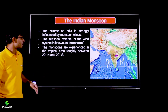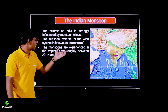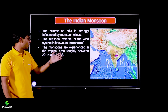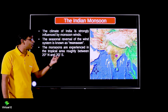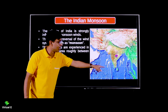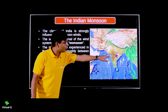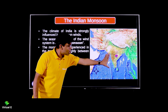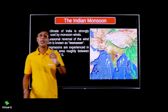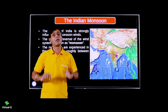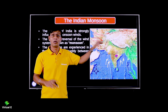Monsoon is experienced in tropical areas roughly between 20 degrees north latitude and 20 degrees south. The latitudinal extent starts from about 8 degrees 4 minutes and goes up to 20 degrees. That is why you see that the coastal areas and south India receive much more rainfall compared to the north.